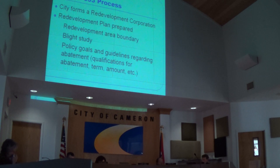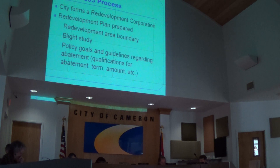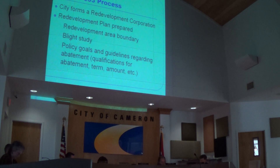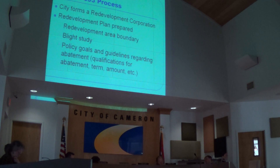For Chapter 353 to work, the area has to be a blighted area under the statute. That means a portion of the city where the legislative authority — which is you all — determines that by age, obsolescence, inadequate or outmoded design, or physical deterioration, properties have become economic and social liabilities. The reason these plans are set up in downtowns is that a lot of economic development in the 70s and 80s occurred outside, and there wasn't much investment in downtown areas, leaving buildings deteriorating.